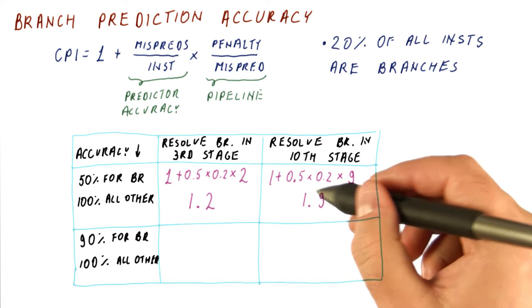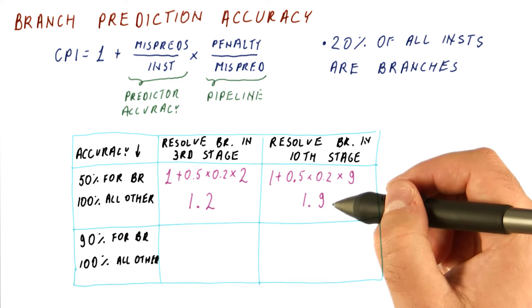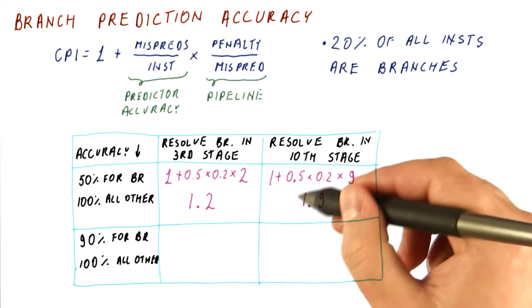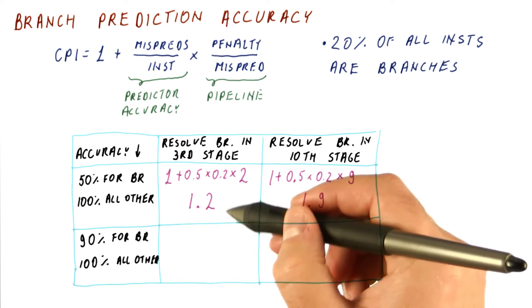For the overall CPI of 1.9, this is a significantly worse CPI than we were getting here.